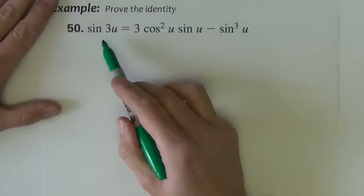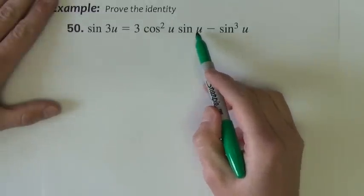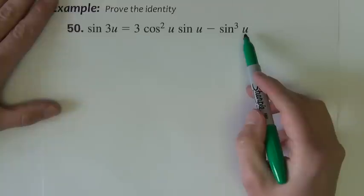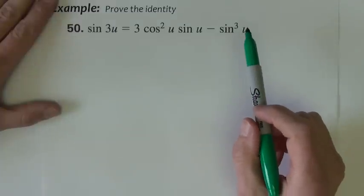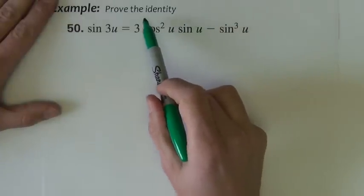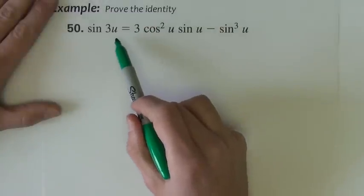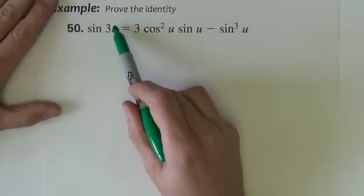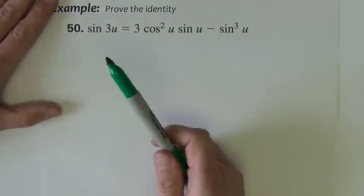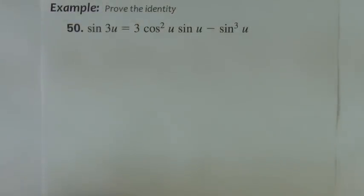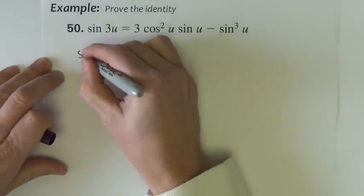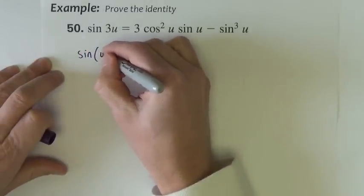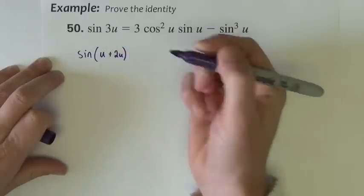Alright, next identity. Sine 3u equals all this over here. Now, you might recall me stating at the start of section 5-2 that we should always start with the more complicated side first. Certainly this side looks more complicated. However, I'm going to argue that this side, where we have this triple angle right here, is actually the more complicated side. And it all kind of boils down to how you see it, how you rewrite it.